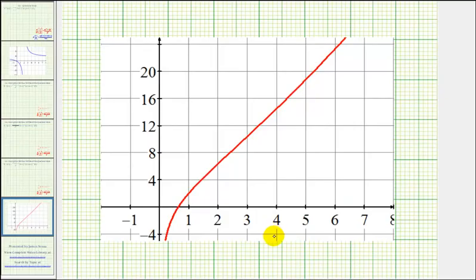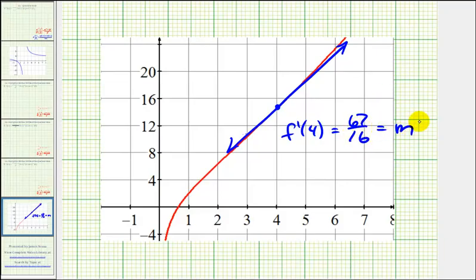Here's the graph of our function, and here's the point on the function when x equals four. If we were to sketch a tangent line at this point, it might look something like this. And since f prime of four was equal to 67 sixteenths, this is also the slope of our tangent line. I hope you found this example helpful.